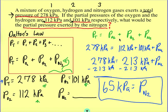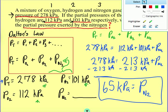So 278 minus 213 gives us 65 kPa is equal to the pressure of N2. And that is our answer. Don't forget to put units on your answer. Now I'm going to move on to the next type of problem.